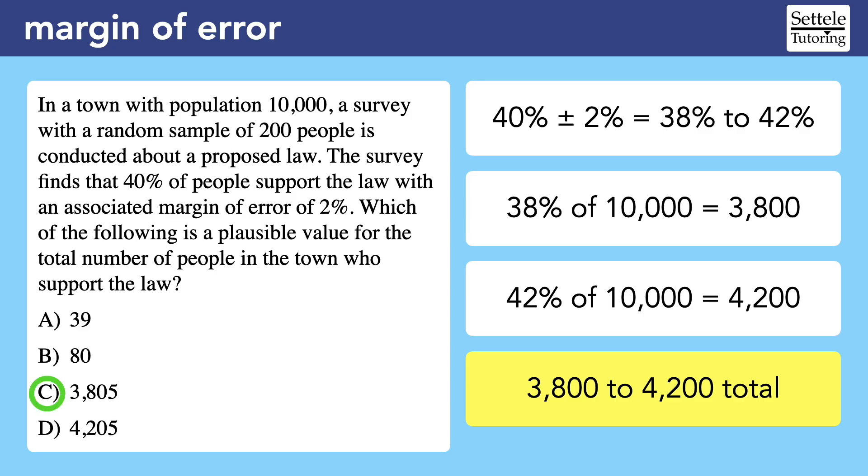Choice A is a percent that falls within the margin of error. Choice B is a value that makes sense if we were asked how many people in the sample support the law. And choice D is outside the range, so it misunderstands what margin of error is telling us.